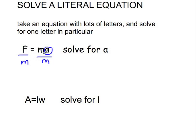When you divide both sides by M, the M's cancel here. You get A, which is what you want, and over here all you have is F over M.